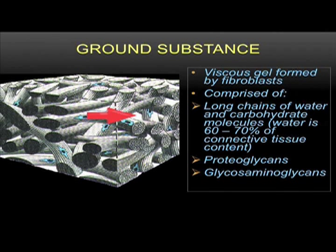It's a viscous gel formed by fibroblasts and is comprised of long chains of water and carbohydrate molecules. Water is 60 to 70 percent of the connective tissue content. We have proteoglycan aggregates and glycosaminoglycans involved.